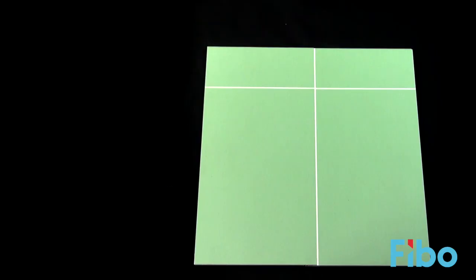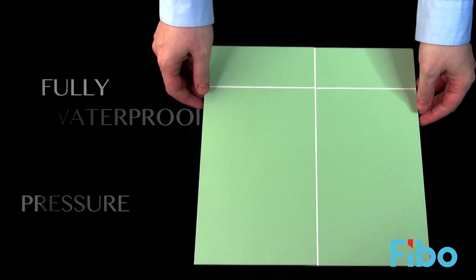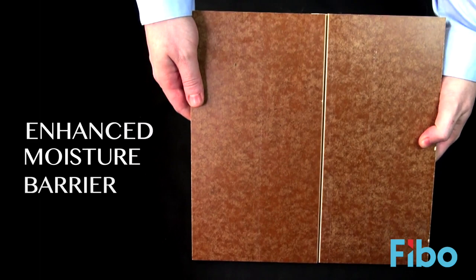On the front of the panel is a fully waterproof high pressure laminate and on the reverse is an enhanced moisture barrier which also prevents the panel from bowing.